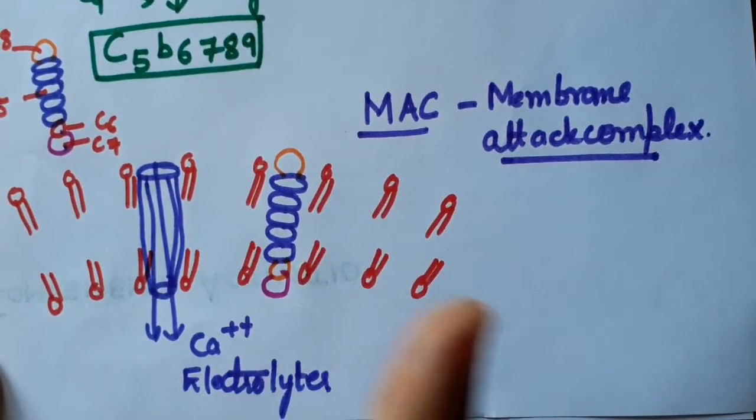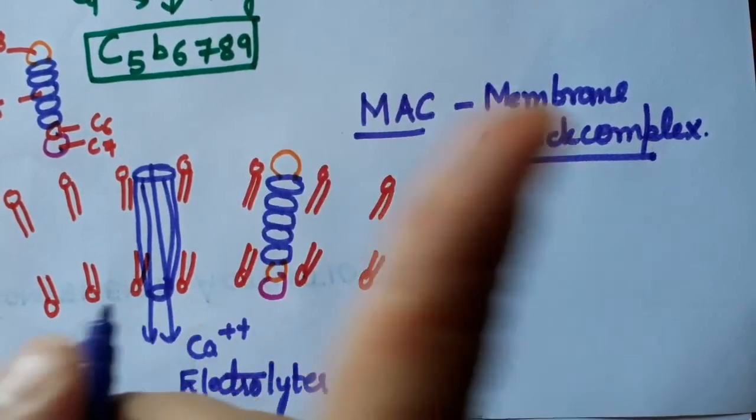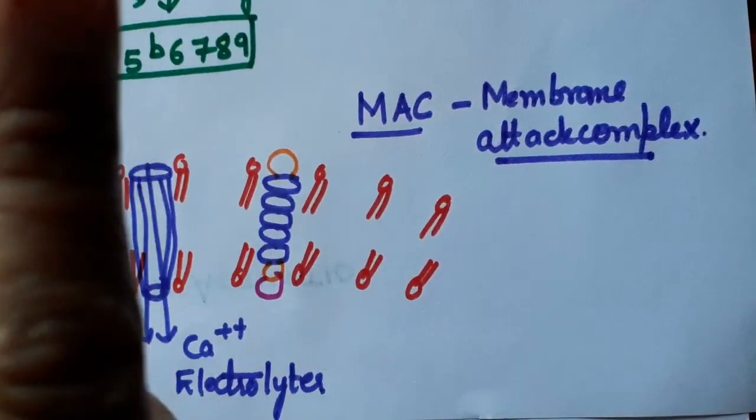This is how the alternative pathway works. It also brings about inflammation reaction, opsonization of the pathogen, and lysis of the pathogen. I hope you all have understood and liked the lecture. Thank you.